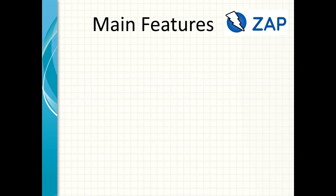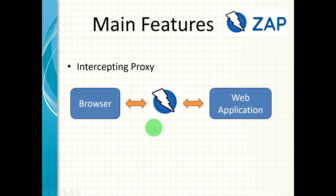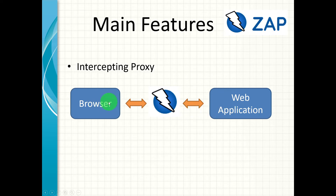So let us go into the main features of ZAP. The first and foremost feature is the intercepting proxy. As you can see on the screen, it sits between the browser on your machine and the web application. Any messages you fire to the web application go via the ZAP proxy, and consequently any responses coming from the web application also go through ZAP proxy and are then received by the browser.